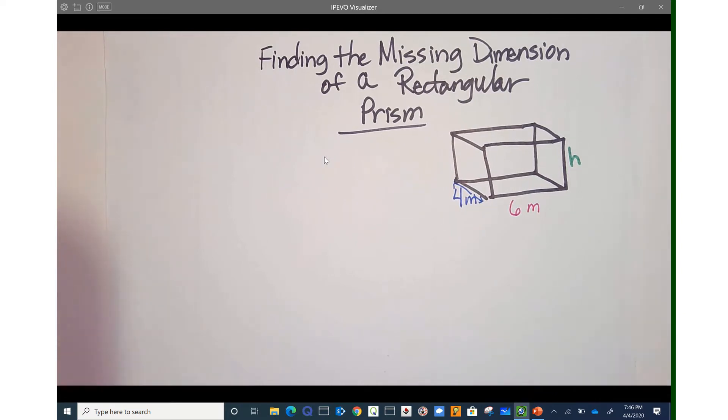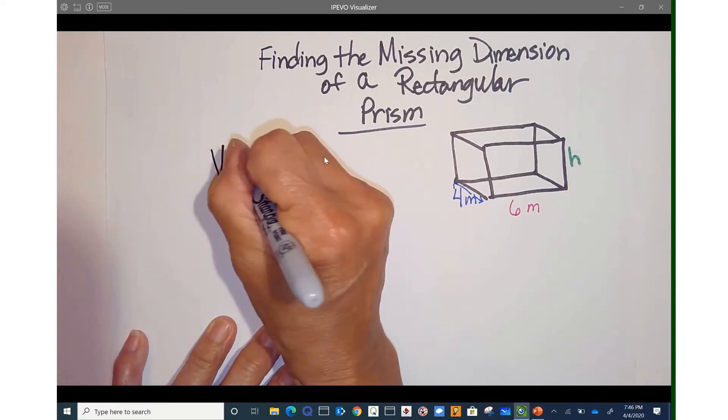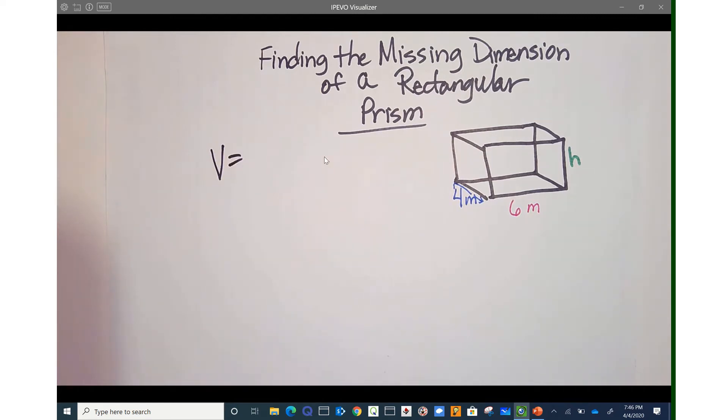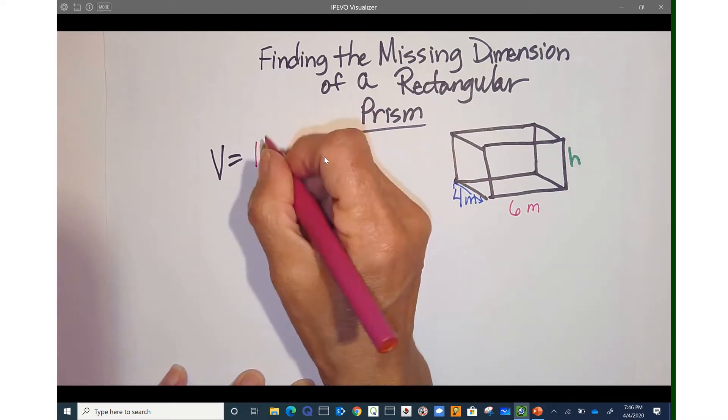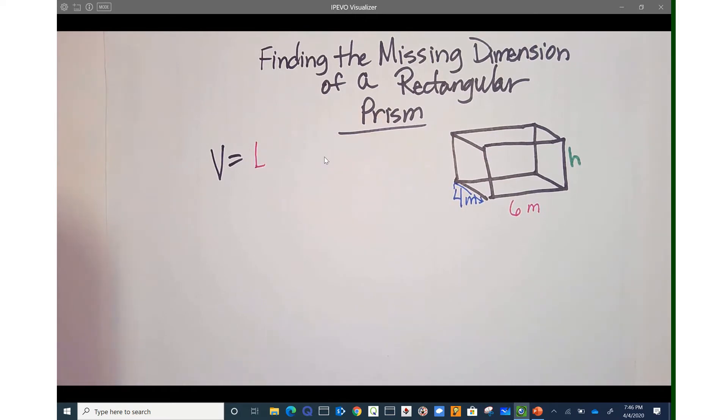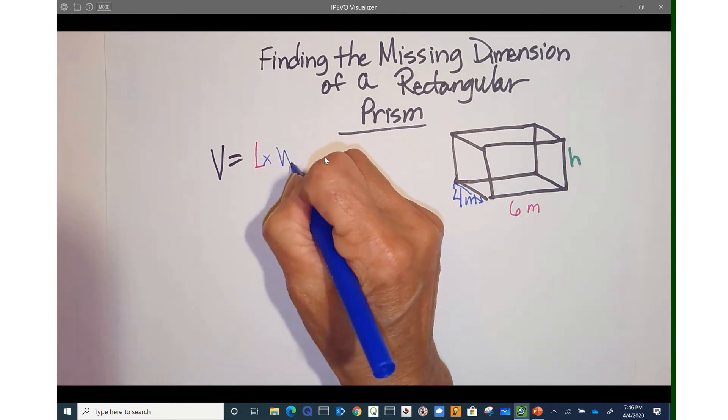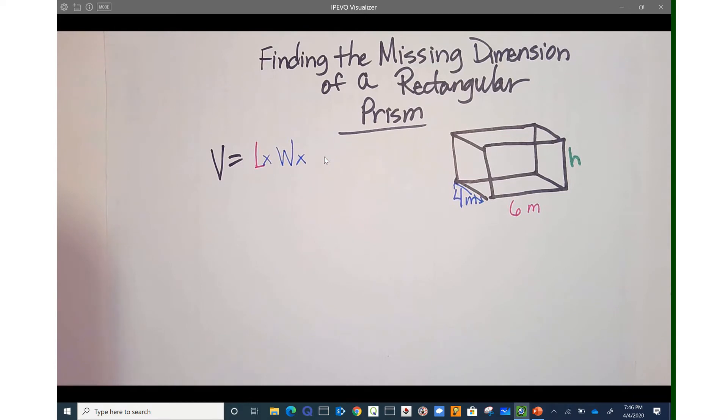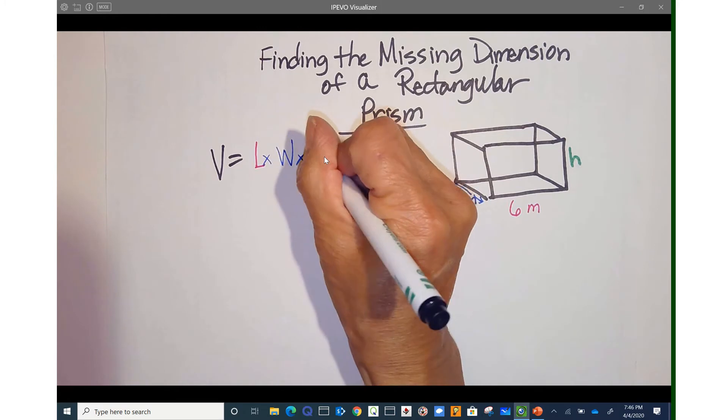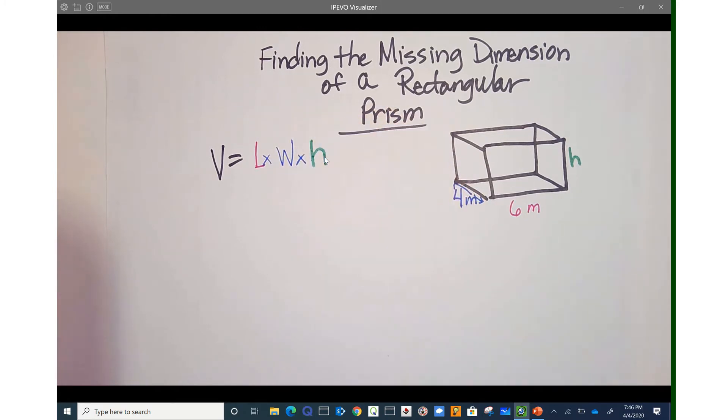So I'm going to write my regular formula right here. Volume equals, and I'm going to use LWH. L times width times height.